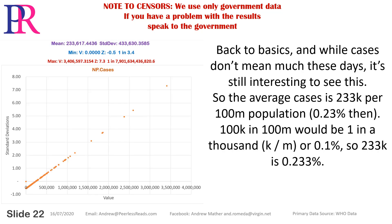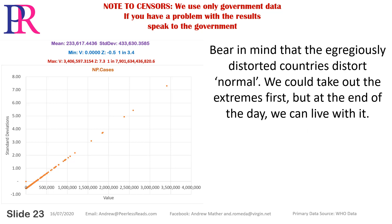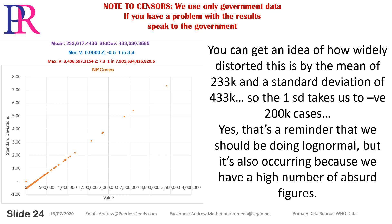Back to basics: while cases don't mean much these days, it's still interesting. The average cases is 233,000 per 100 million population — 0.23%. For context, 100k per 100 million would be 1 in 1,000 or 0.1%, so 233k is 0.233%. Bear in mind that egregiously distorted countries distort the normal — we could take out the extremes, but at the end of the day we can live with it.